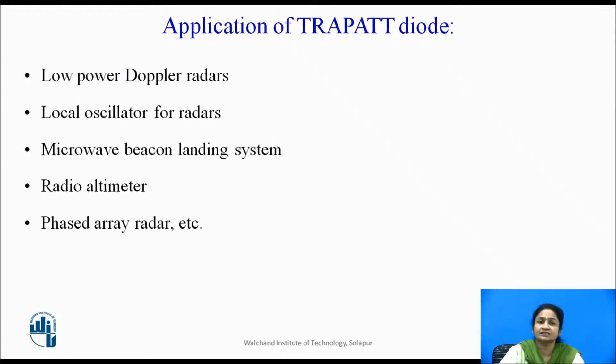Application areas of this diode are in radar, Doppler radar. They are used as low power Doppler radar. They are also used as a local oscillator in the radar system. Also, in microwave landing systems, these TRAPATT diodes are used for generating the microwave frequencies. In aircraft, they are used as a radio limiter. Also, in phased array radar systems, these are used as an amplifier as well as microwave signal generators. These are the application areas of the TRAPATT diodes.